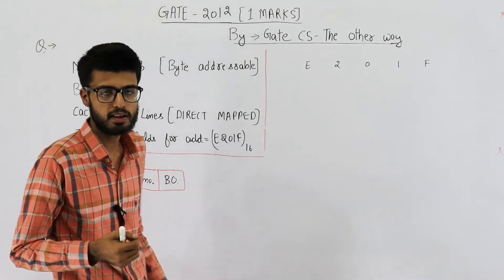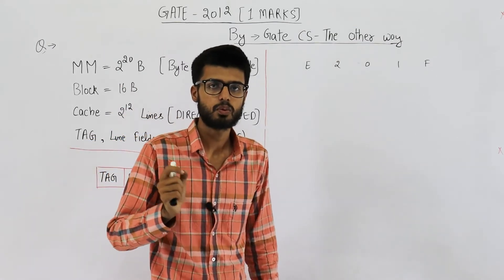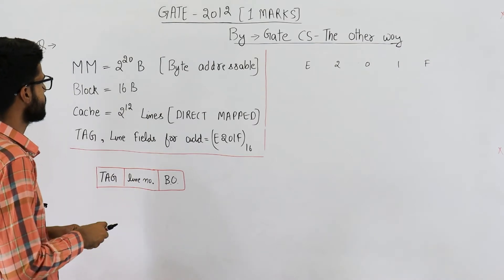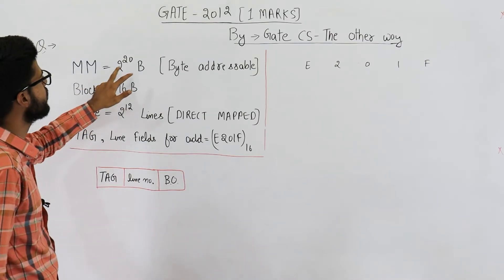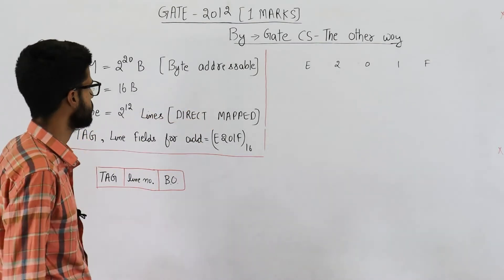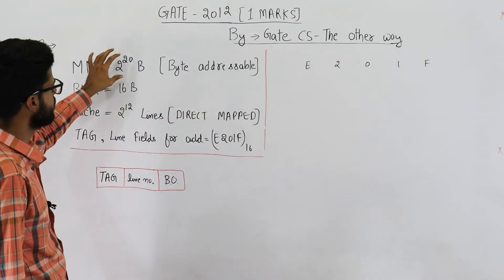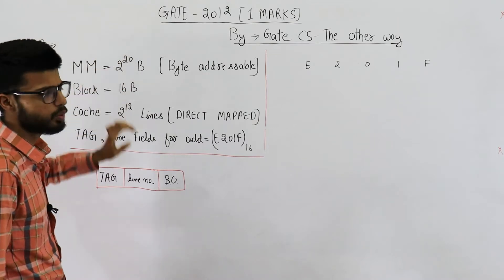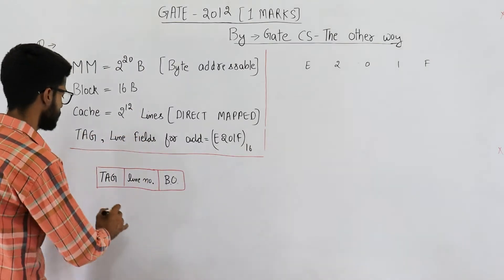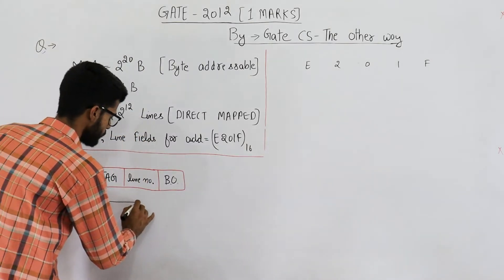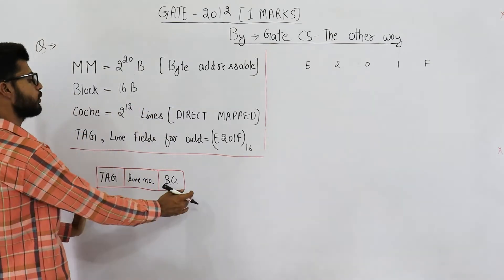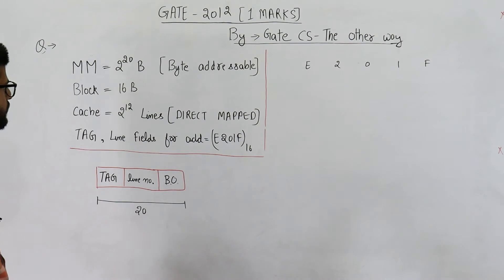This is the physical address. Physical address is split into tag, line number and block offset. Now they are saying main memory is 2^20 bytes. Also it's a byte addressable main memory that means there are 2^20 words in main memory which obviously means the physical address is going to be of 20 bits.